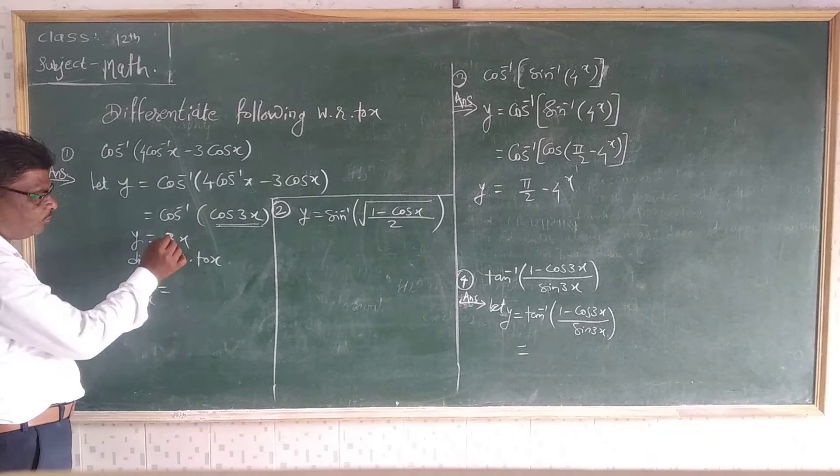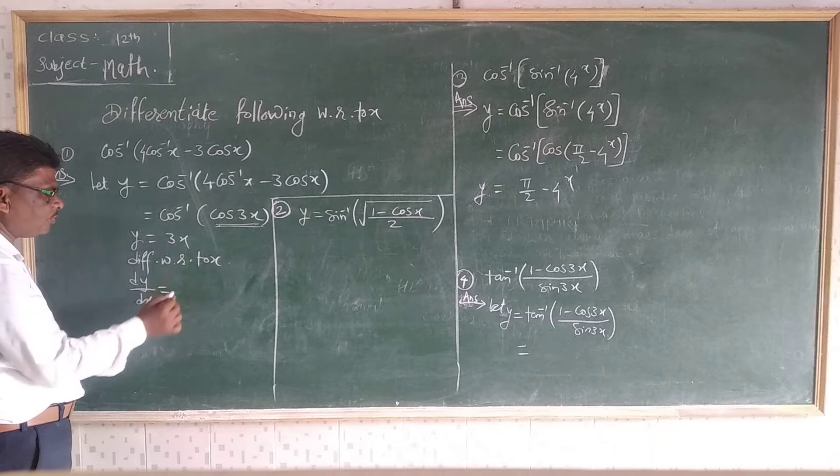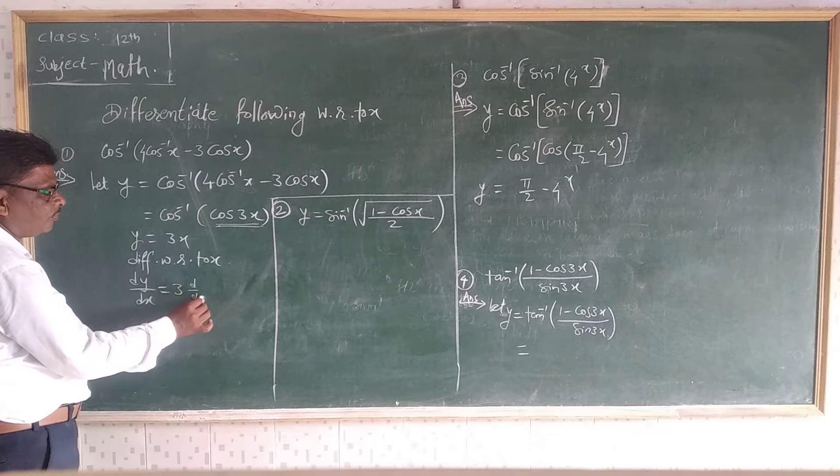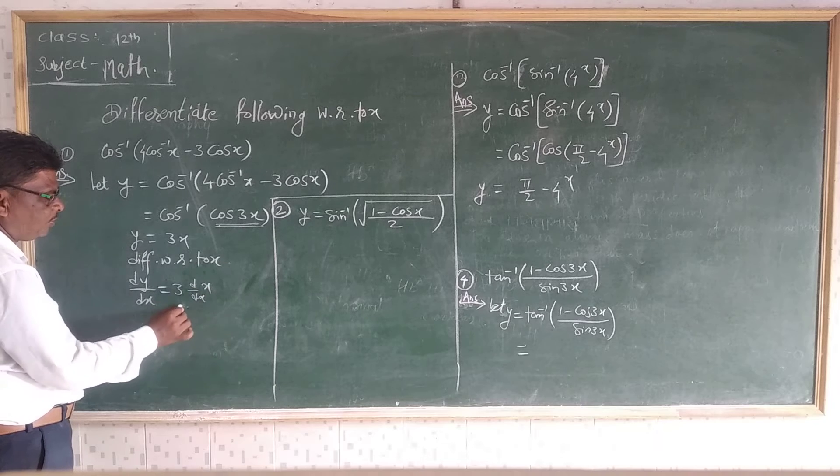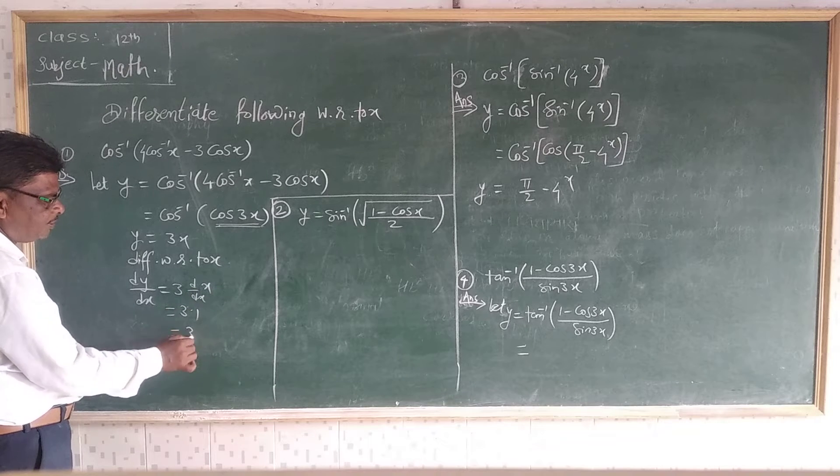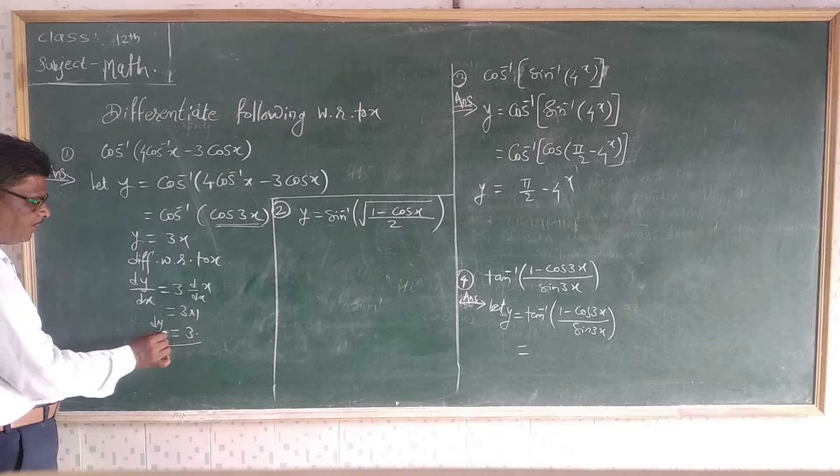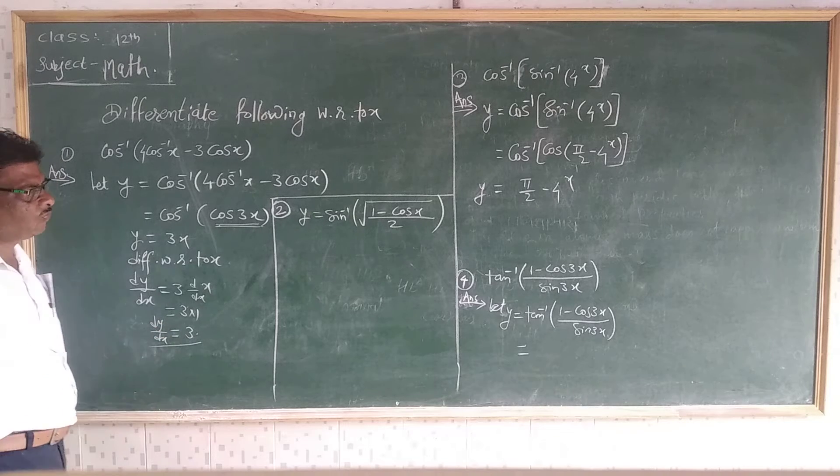Then differentiate with respect to X. 3X with respect to X we get 3 times dX/dX, which is 1. That is, the given answer is 3.